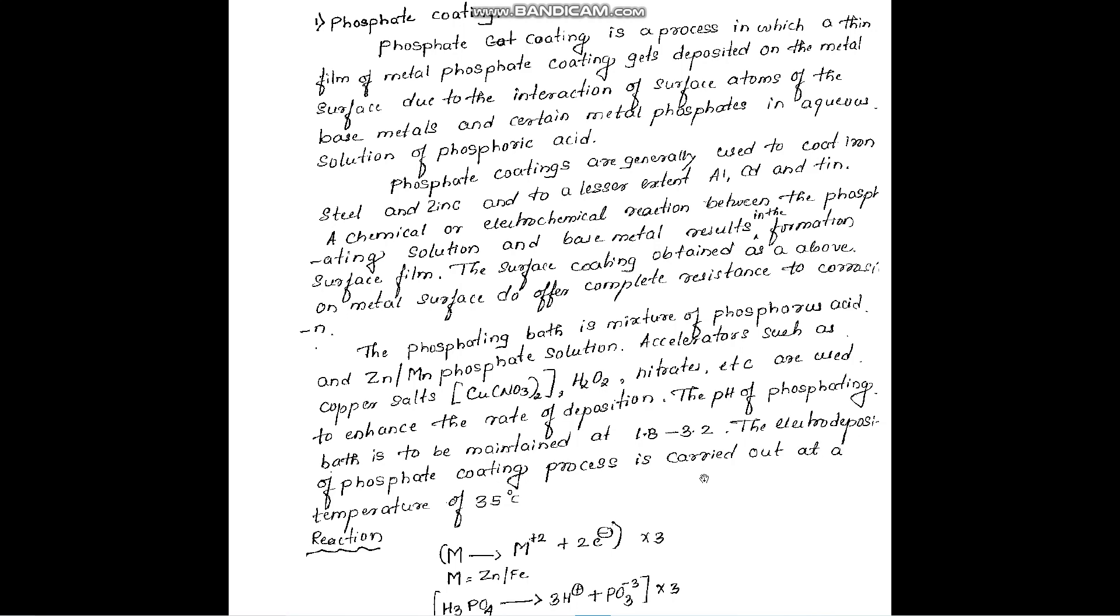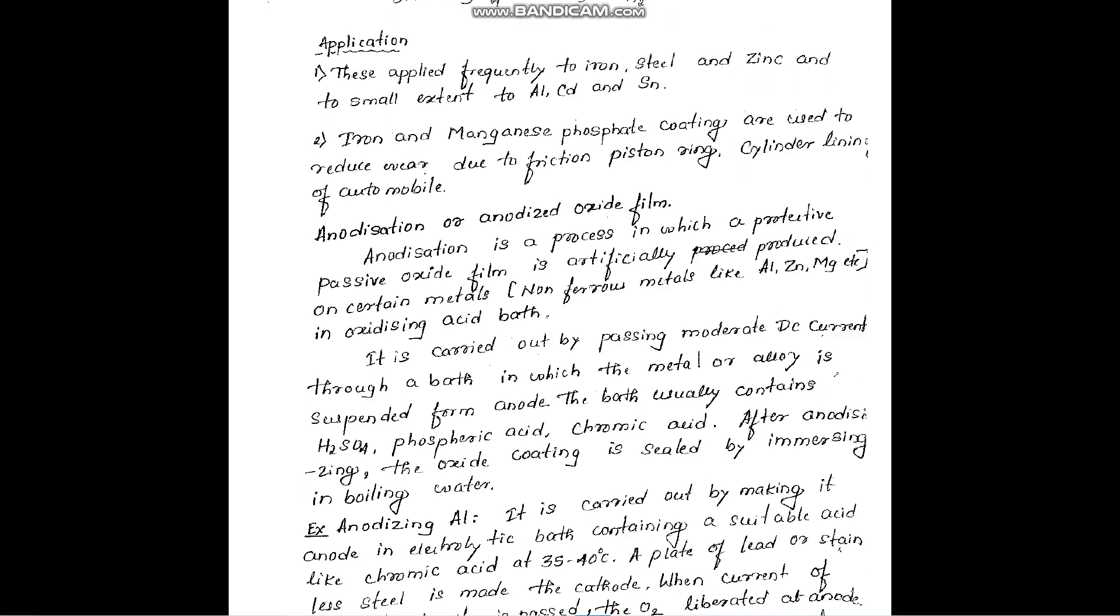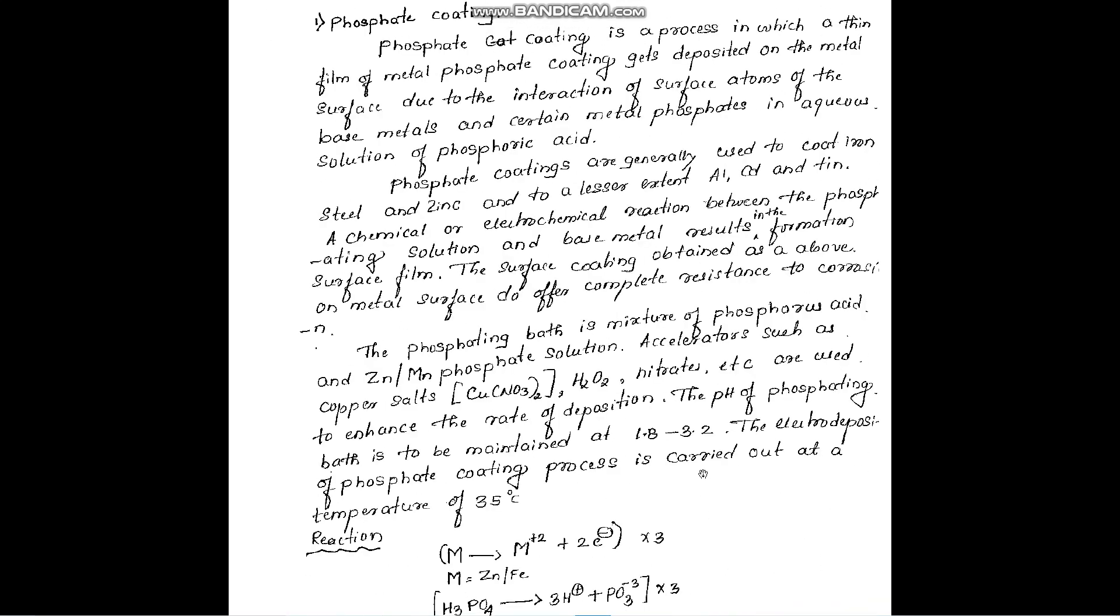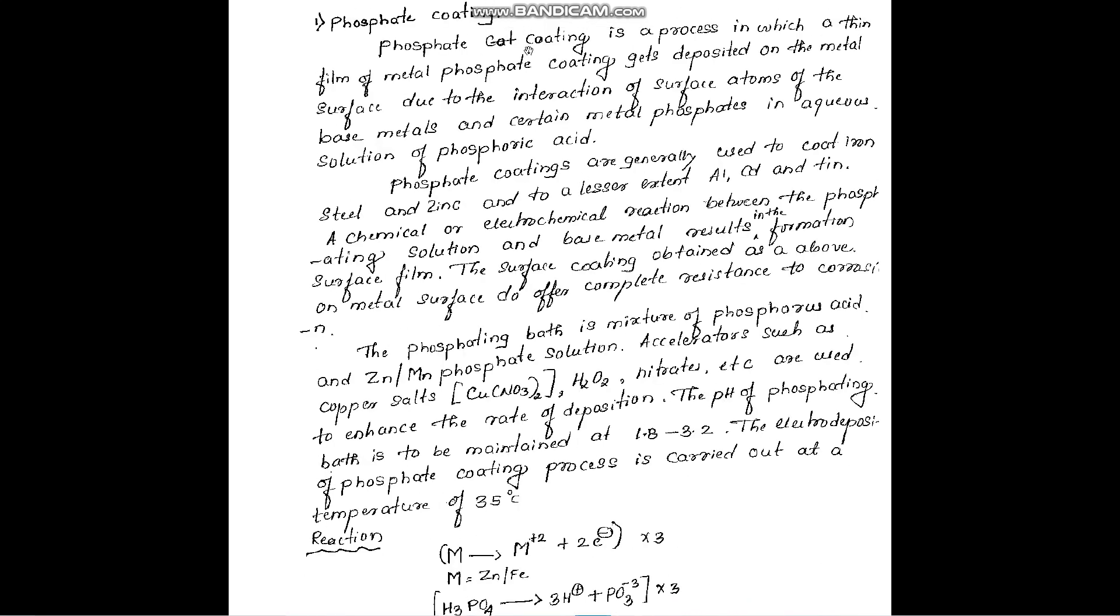The electrodeposition of phosphate coating process is carried out at a temperature of 35 degrees Celsius. And the reactions involved in the phosphate coating are discussed here.